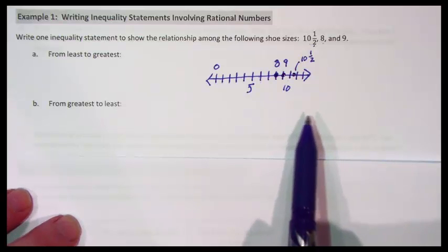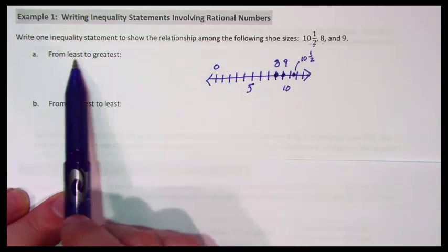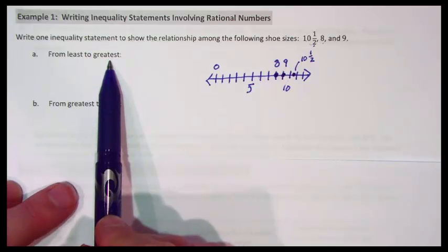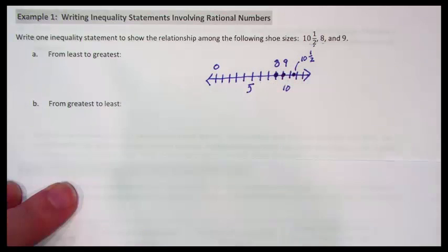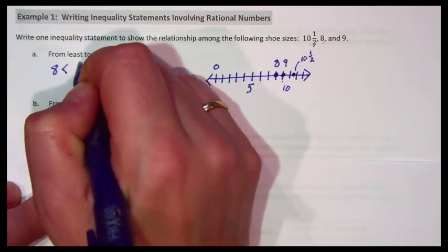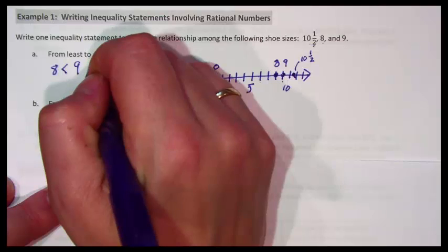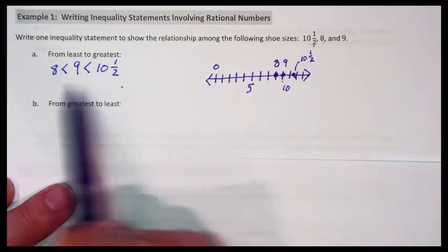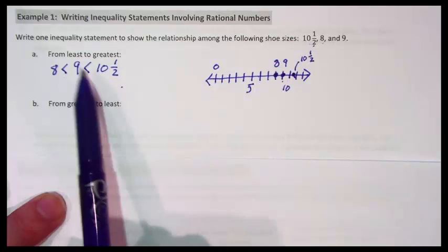That's what my number line looks like. Now I have the numbers in order from least to greatest, which is what I want to do first. Least means the smallest; greatest means the biggest. My least number — the number furthest to the left — is 8. 8 is less than 9, and 9 is less than 10½. So we wrote one inequality statement to compare these three numbers, putting the less than symbol between each number.